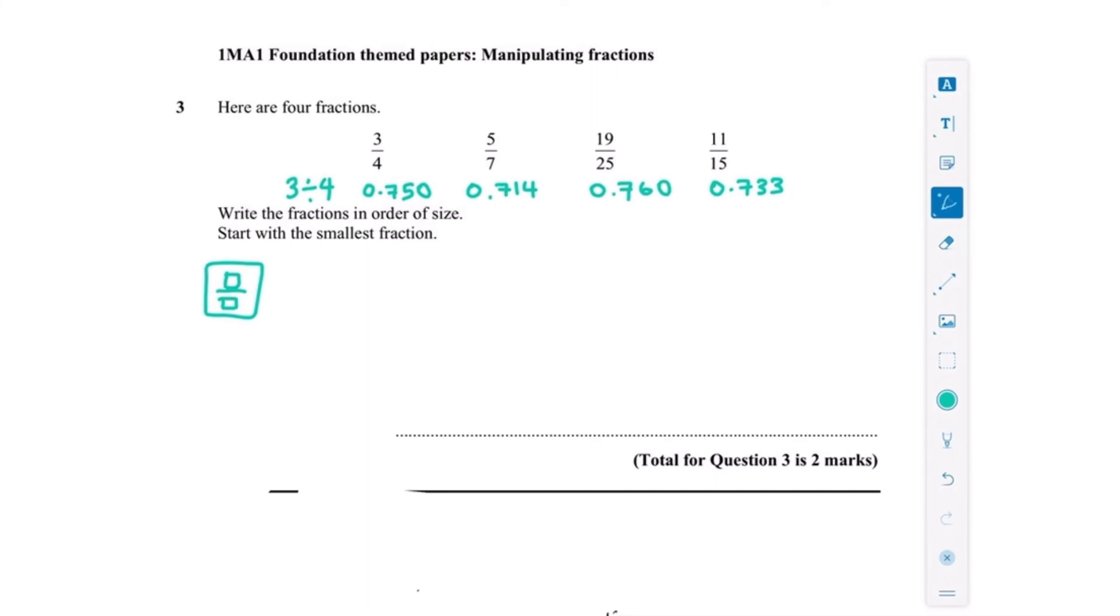So looking at these, the smallest would be 5 over 7, and the next smallest would be 11 over 15. The third smallest is 3 quarters, and last but not least, 19 over 25. So that would be a much better method on a calculator paper, but for non-calculator, do it as I did above. I hope you find that helpful.